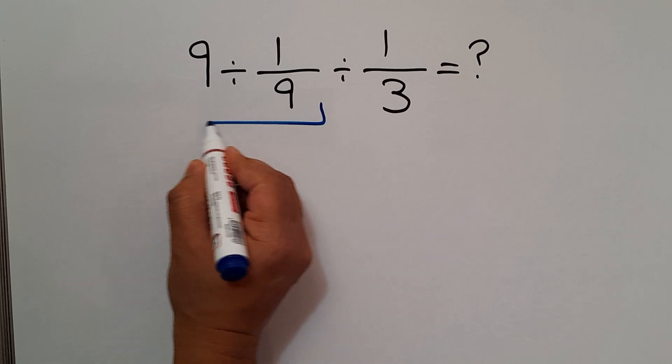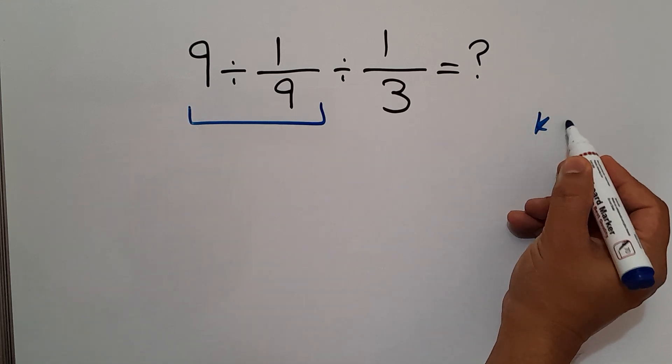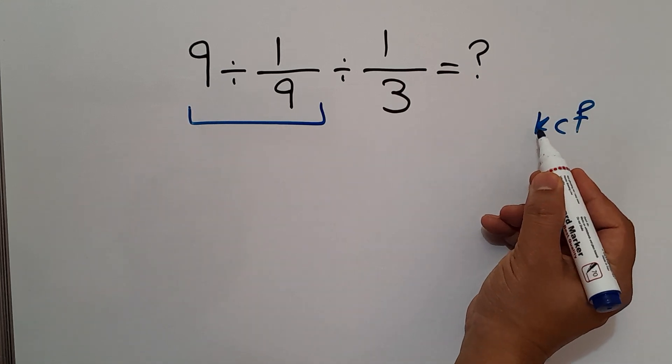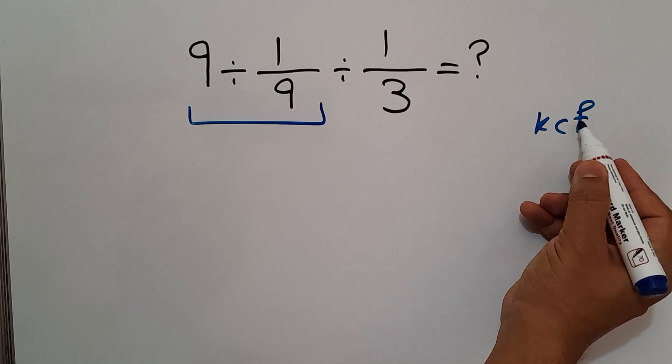According to the KCF rule, K stands for keep, C stands for change, and F stands for flip. Keep the first fraction, change division to multiplication, and flip the second fraction.